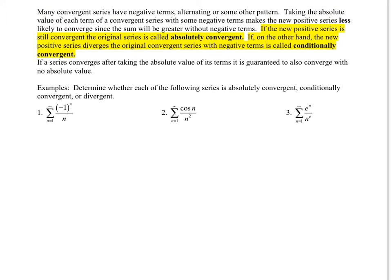Example number one. This one right here is a harmonic — specifically, it's an alternating harmonic. So as it is, with positive and negative terms, n equals 1 to infinity of negative 1 to the n over n is an alternating harmonic. This converges because the terms go to 0 and they are also decreasing as we go, for the absolute value of those terms.